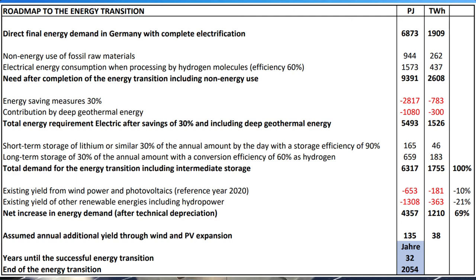At an annual increase of 135 petajoules of green energy production per year, starting from 2020 and dividing 4,357 by 135, the result is 32 years — meaning a complete energy transition would be achieved by approximately 2054.